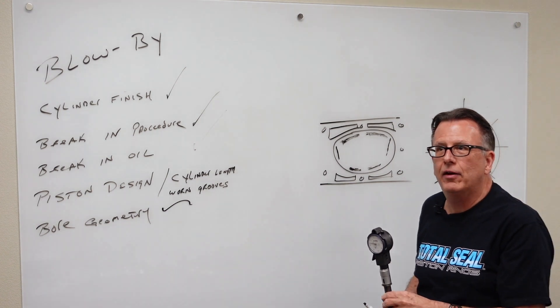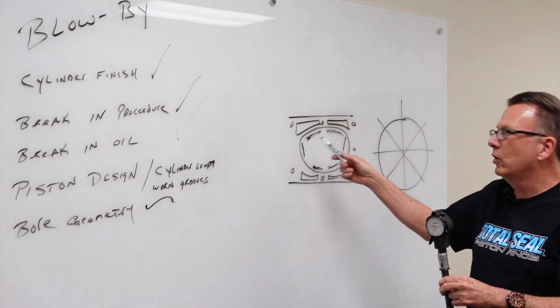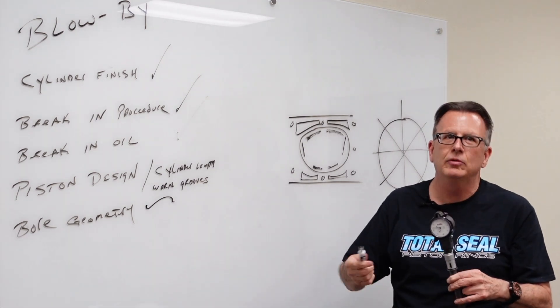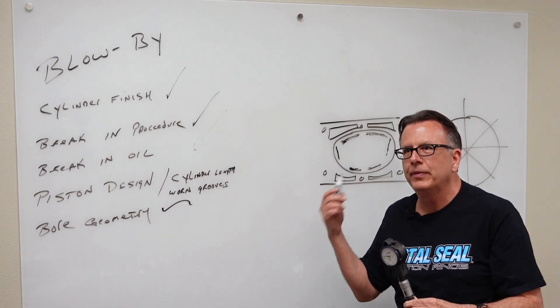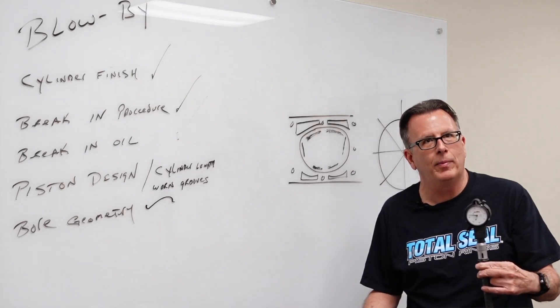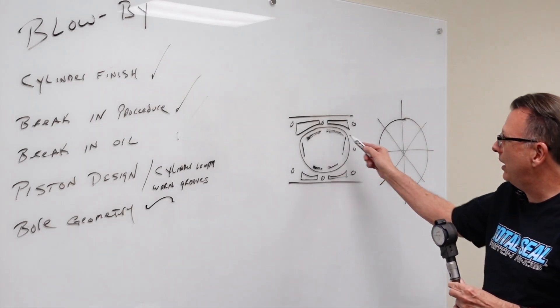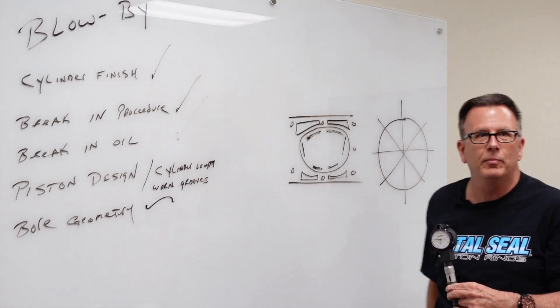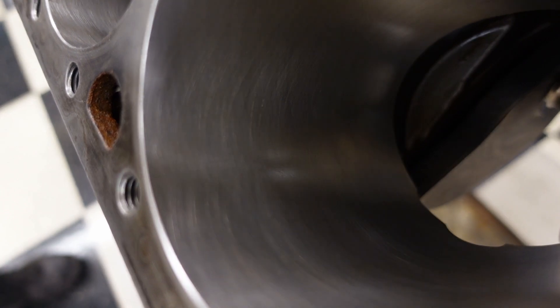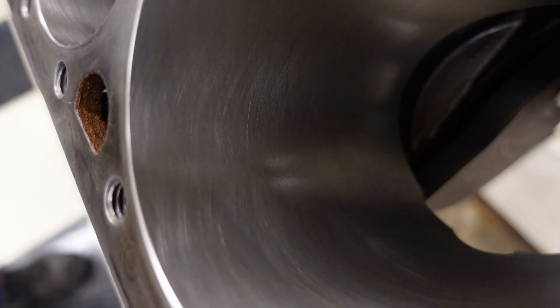Once I think they get that sorted out, this problem is going to go away. And his ring issue, which is not a ring issue, it's actually a block issue. He's got areas in the cylinder that the rings are not touching. His blow by issue is going to go away. So when you see these shadows in the cylinders, that's an immediate sign that we've got an area that is not contacting. The ring is not touching the bore.